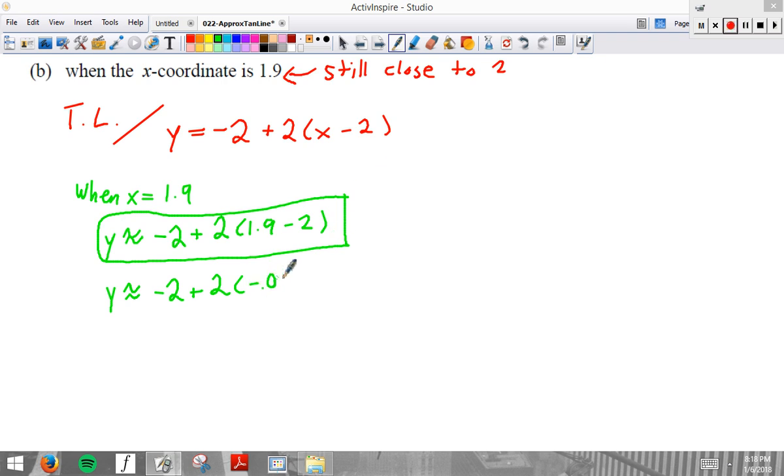Negative 0.1. Approximately negative 2 minus 0.2. Approximately negative 2.2. That's it.